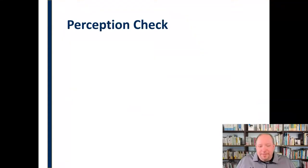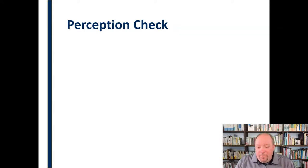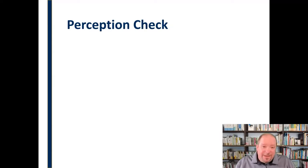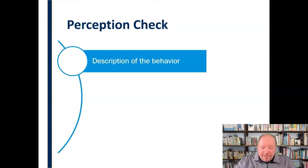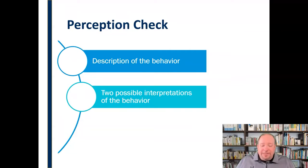One simple and important tool, especially in hearing, is what we call a perception check. A perception check is a simple way to verify that what we're hearing is correct and that we're understanding things correctly. It's assertive but not aggressive — that's important. There are three simple steps: first, offer a description of the behavior — not an evaluation, not a complaint, just a fact-based description of what is happening.